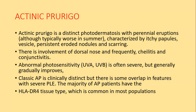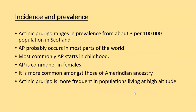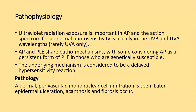Incidence and prevalence: actinic prurigo ranges from 3 per 100,000 in Scotland and occurs in most parts of the world. It most commonly starts in childhood and is commoner in females, more common among those of Amerindian ancestry, and more frequent in populations living at high altitudes. Pathophysiology: ultraviolet radiation exposure is important; the action spectrum is usually in the range of UVB and UVA wavelengths, rarely UVA only. Actinic prurigo and PLE share pathomechanisms, with some considering AP a persistent form of PLE in those who are genetically susceptible. The underlying mechanism is again a delayed type hypersensitivity reaction.